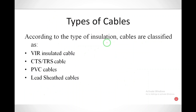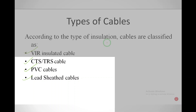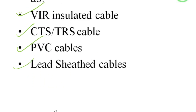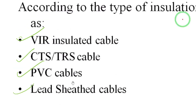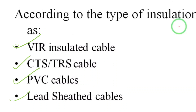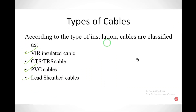Now let us see the types of cables. Cables are classified as: VIR insulated cable, CTS or TRS cable, PVC cable, and lead sheath cable. We are going to see each one.